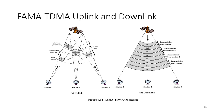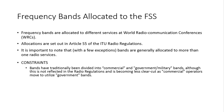Frequency bands allocated to FSS: Frequency bands are allocated to different services at World Radiocommunication Conferences. Allocations are set out in Article S5 of the ITU Radio Regulations. It is important to note that, with a few exceptions, bands are generally allocated to more than one radio service. Certain bands have traditionally been divided into commercial or government/military bands, although this is becoming less clear-cut as commercial operations move to utilize government bands.